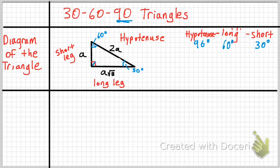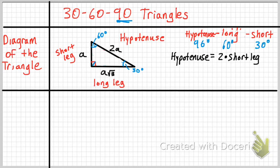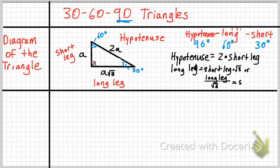For the values: we call the short leg A. The long leg equals A times the square root of 3, and the hypotenuse equals 2 times A. To solve: the hypotenuse equals 2A; the long leg equals the short leg times √3, or equivalently the long leg divided by √3 equals the short leg; and the short leg equals the hypotenuse divided by 2.